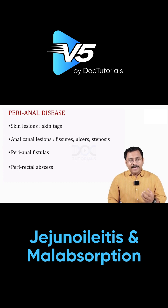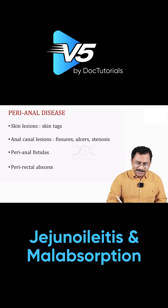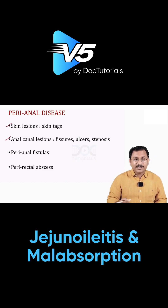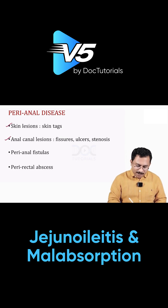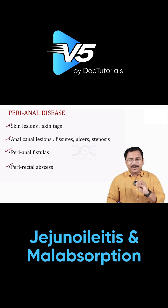Perianal disease is common in Crohn's disease and very rare in ulcerative colitis. You can have skin lesions like skin tags, anal canal lesions like fissures, ulcers or stenosis, perianal fistulas, as well as perirectal abscesses. These are the manifestations when there is perianal involvement in Crohn's disease.